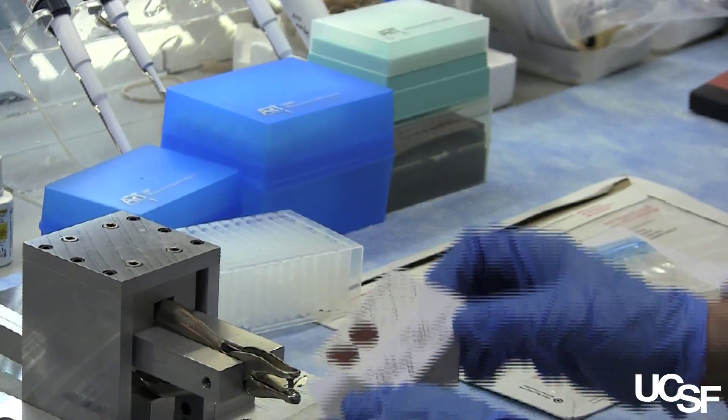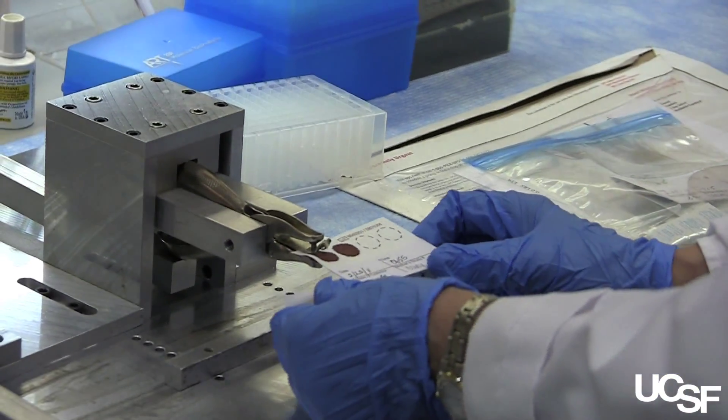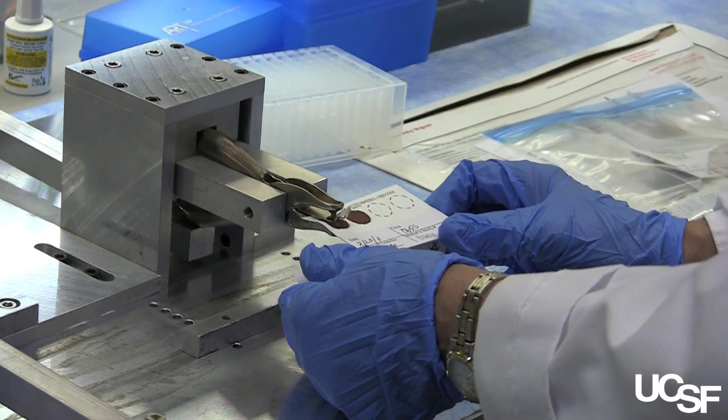The test that we developed is done on the dried blood spots that babies are getting anyway for testing for PKU and metabolic disorders, and so we don't have a new sample and it's much more cost effective to do a screen on that same sample.